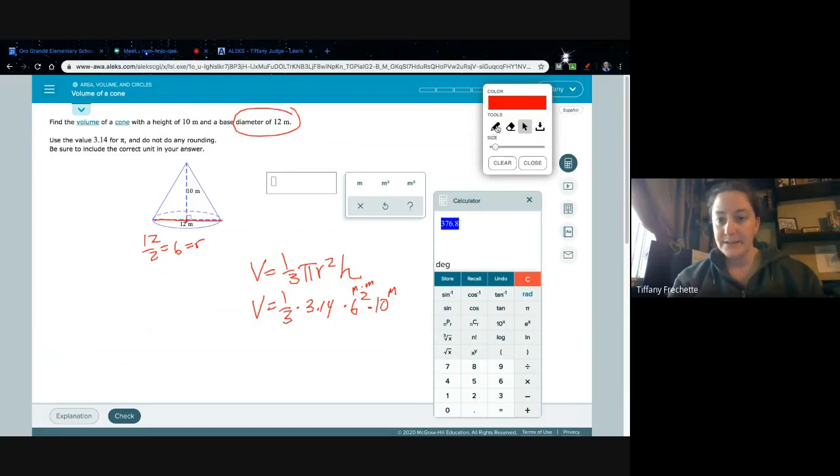And there is my answer. So I'm going to go 376.8 and make sure you select the meters cubed. It may warn you the first time. If it's warned you a bunch of times before this though, it will start marking you wrong. But generally, it does give you a warning before marking you wrong. It says, hey, you forgot to do this. You forgot to round. You forgot to select your unit. It will give you some clues.